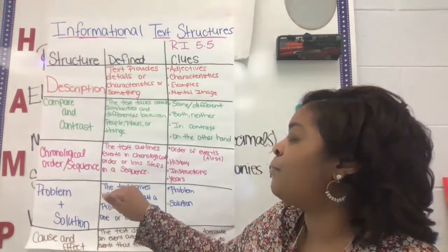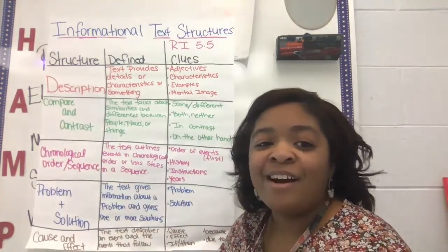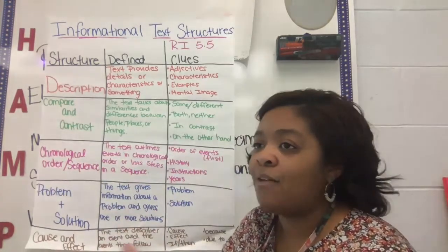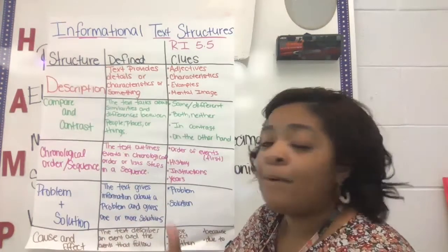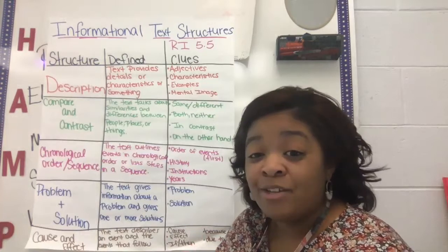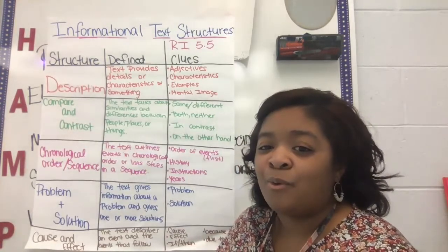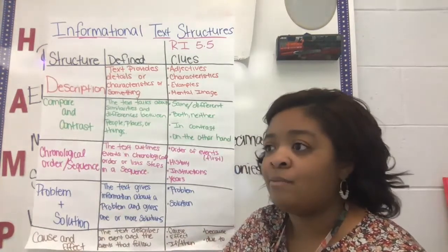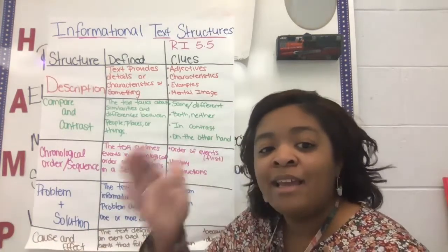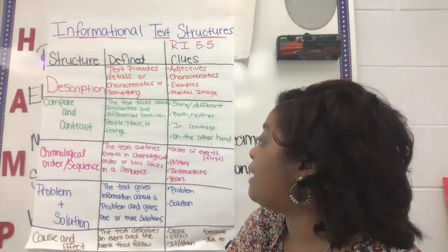Our third text structure is chronological order or sequence — you may see it referred to as either, depending on how the text reads. Both just mean time order. As a social studies teacher, I teach about 700 years of history, so it doesn't make sense to start with World War I, then talk about the Revolutionary War, then the Dust Bowl. In fifth grade social studies, it makes sense to talk about things in time order, like on a timeline. The text outlines events in chronological order or lists steps in a sequence.